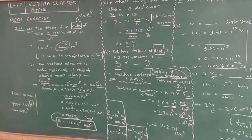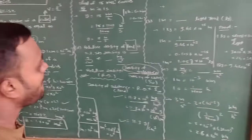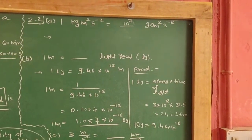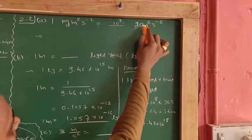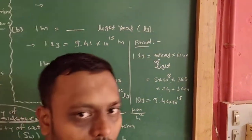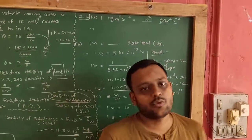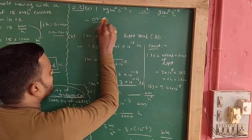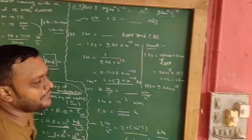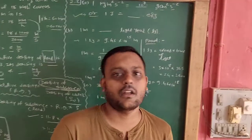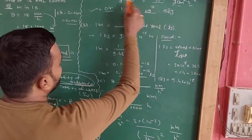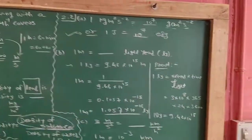Now let's move to next part: 2.2 part A. What is given: 1 kg into meter square per second square is equal to blank gram into centimeter square per second square. We studied this type of numerical in the previous lecture — 1 newton equals how much dyne. So this question is similar. The answer is 1 newton = 10 raise to 7 dyne. You can verify by converting kg to gram and meter to centimeter.